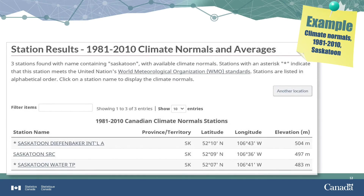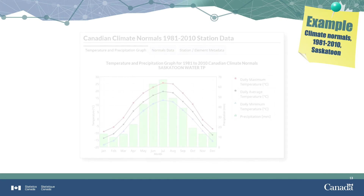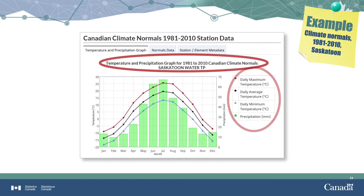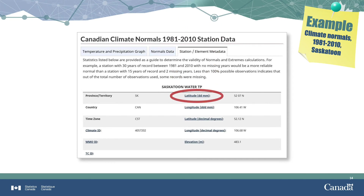Let's look at data standards and metadata through an example. You can go to this webpage on the Government of Canada website by navigating to Climate Normals and Averages and searching for a station name containing Saskatoon. We chose the weather station called Saskatoon Water TP. Clicking on that station brought us to a graph with an informative title, a legend, and labeled axes — these are examples of descriptive metadata. Above the graph are three tabs, and we clicked on the one for station/element metadata.